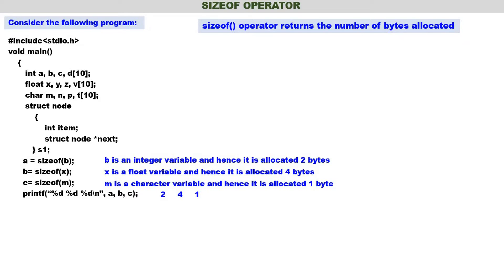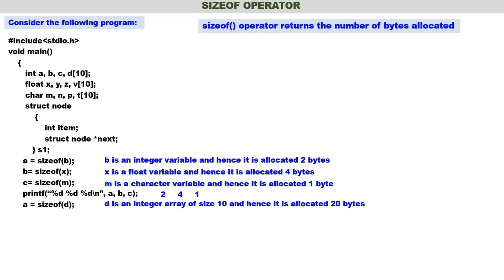Now a is equal to sizeof(d). What is d? d is an integer array which can store 10 elements. For storing one element you require 2 bytes, so for 10 elements you require 20 bytes. d is an integer array of size 10 and hence it is allocated 20 bytes. sizeof(d) is 20, so a will contain 20.